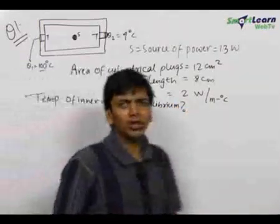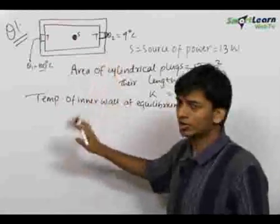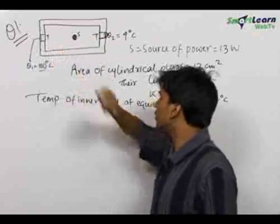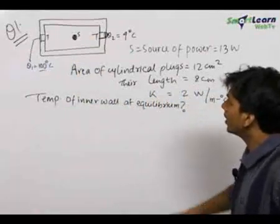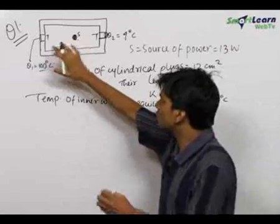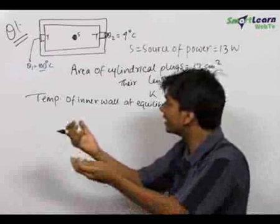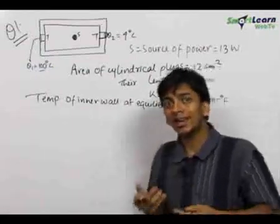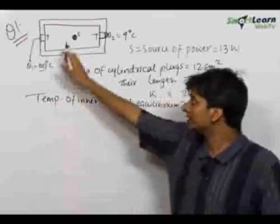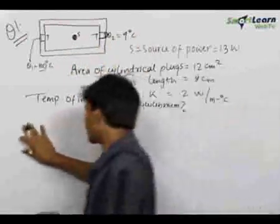Here equilibrium means thermal equilibrium, and at thermal equilibrium the temperature becomes constant. Let the constant temperature finally attained be equal to T. When there is thermal equilibrium, the net heat being stored inside the chamber becomes equal to zero. That is, the net heat coming inside the system equals the net heat going out of the system. In other words, the rate at which heat enters the system equals the rate at which heat leaves the system.